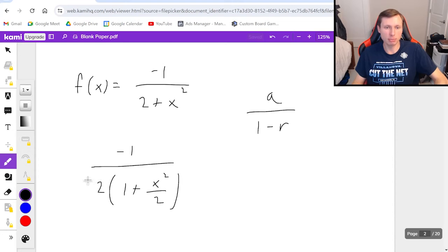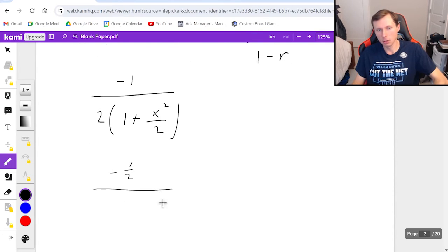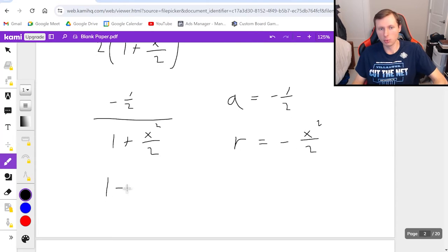And then even this 2 can be moved up to the numerator as negative 1 half over 1 plus x squared over 2. And the reason why I write it like this is because now I clearly see a is negative 1 half and r is negative x squared over 2. Why negative? Because it's supposed to be 1 minus r. If it's plus, that means r is going to end up being kind of like a double negative to make that positive. So here's my value for a and r.